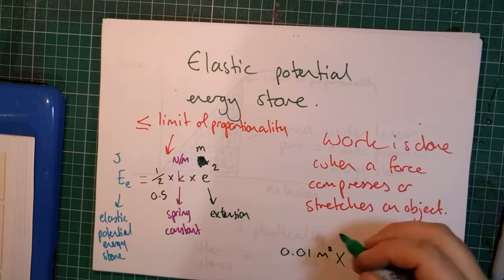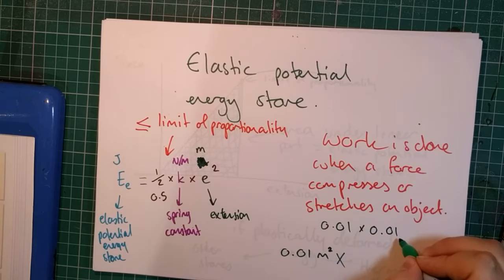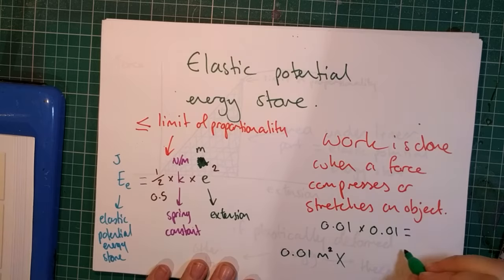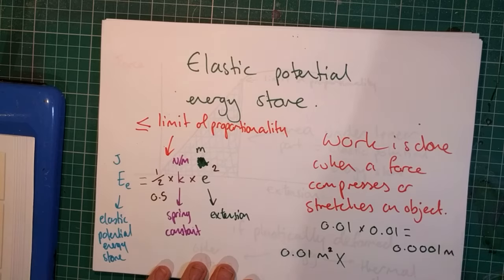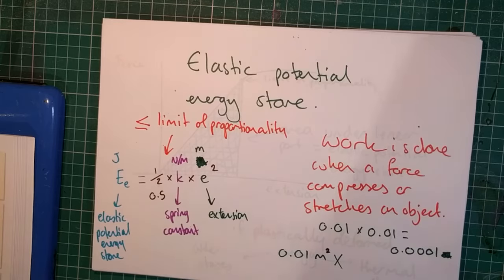What it means is that you take the 0.01, you multiply it by itself, and then you should find that you have an answer. This is going to be a really small answer: 0.0001 meters.